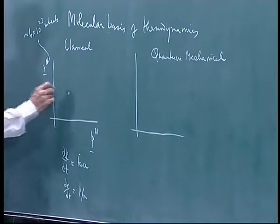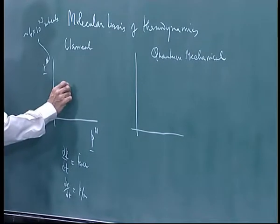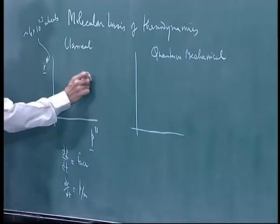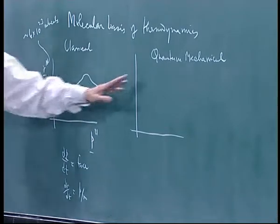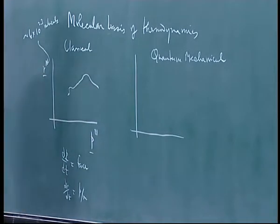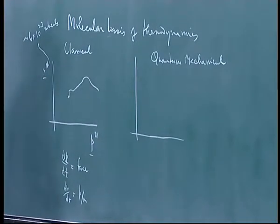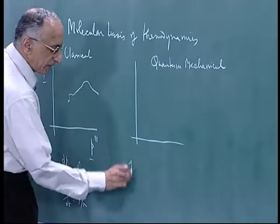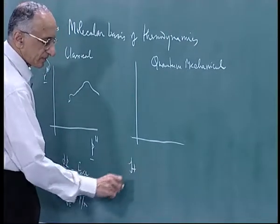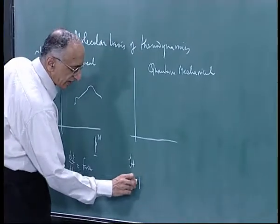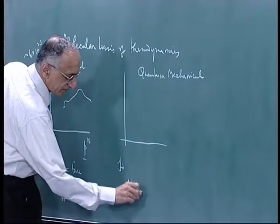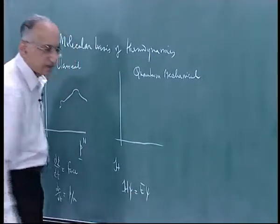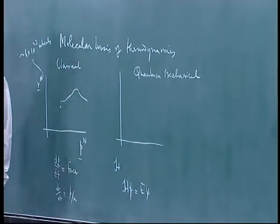In practice, if you could theoretically solve it, you would have a trajectory that evolves in some way. Now in quantum mechanics, what you do is solve Schrödinger's equation — you write down the Hamiltonian and solve H ψ = E ψ to get the stationary states of the system.